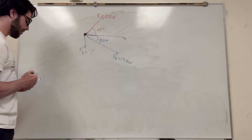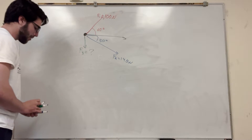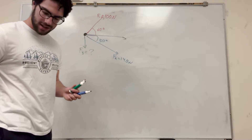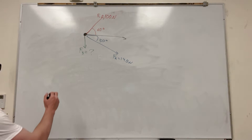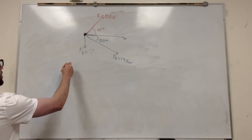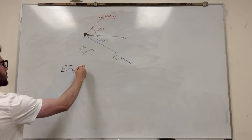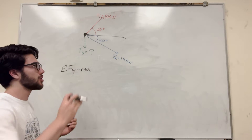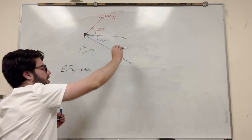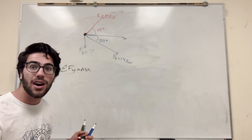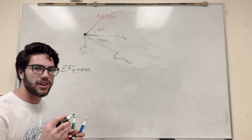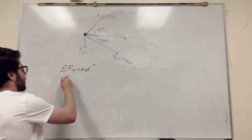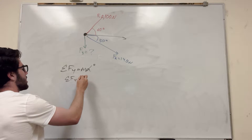When solving a problem like this, the most important thing is to divide our work into two parts. We're going to look at the force in the Y direction. We know that the sum of forces in the Y direction equals mass times acceleration. If we're trying to make this go just straight in the X direction, we want zero acceleration in Y, so the sum of forces in the Y direction is equal to zero.